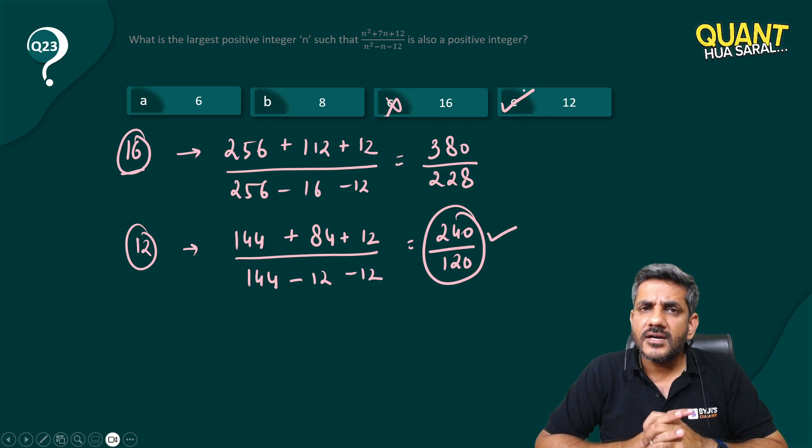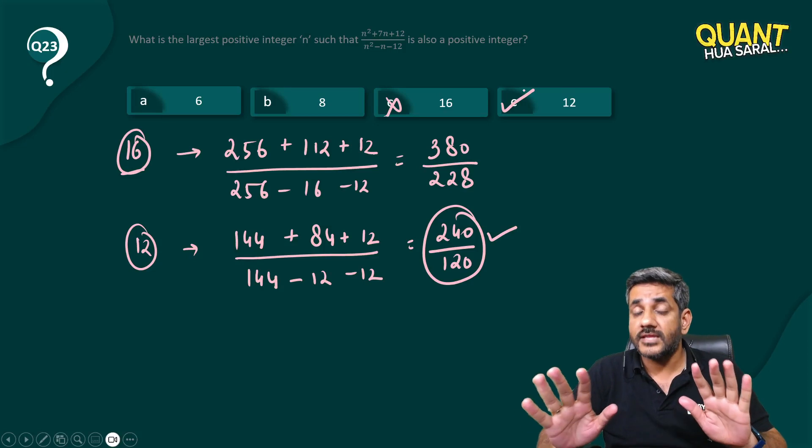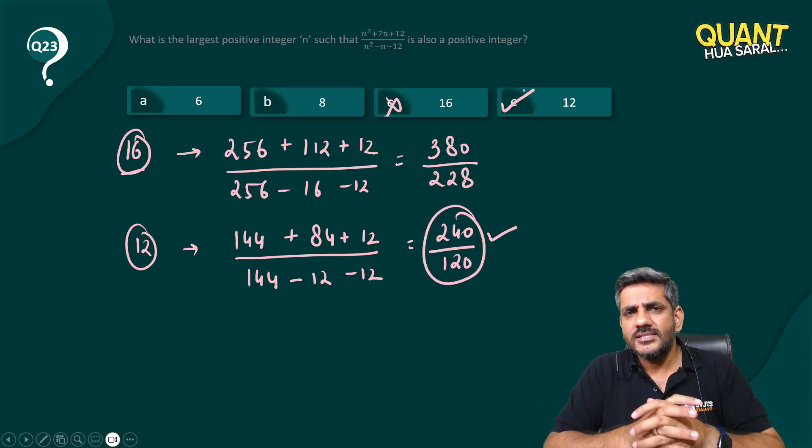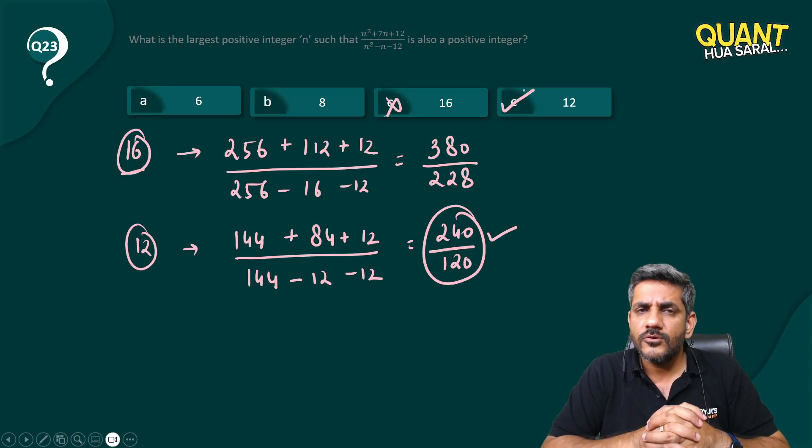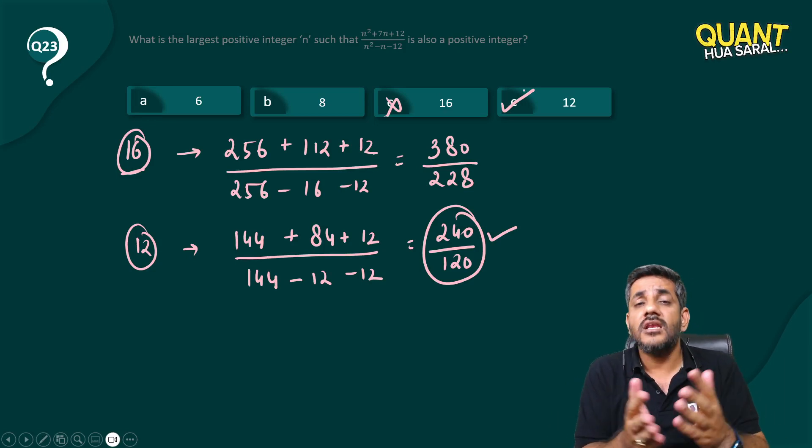Is this too difficult to do? It is not, because don't we know 16 square and 12 square? If you do not know that as well then there is a problem. But in these questions many times just by plugging in the values you can get the answer and it does not take much of your time.